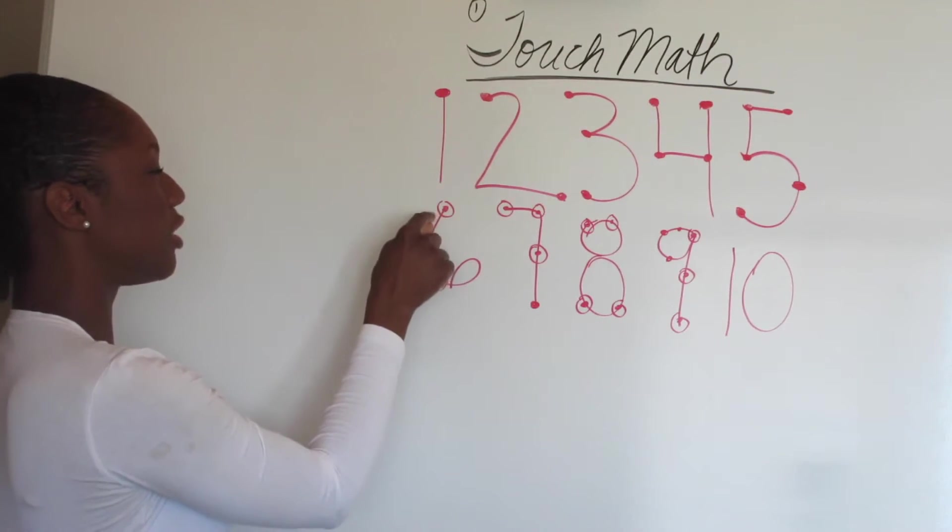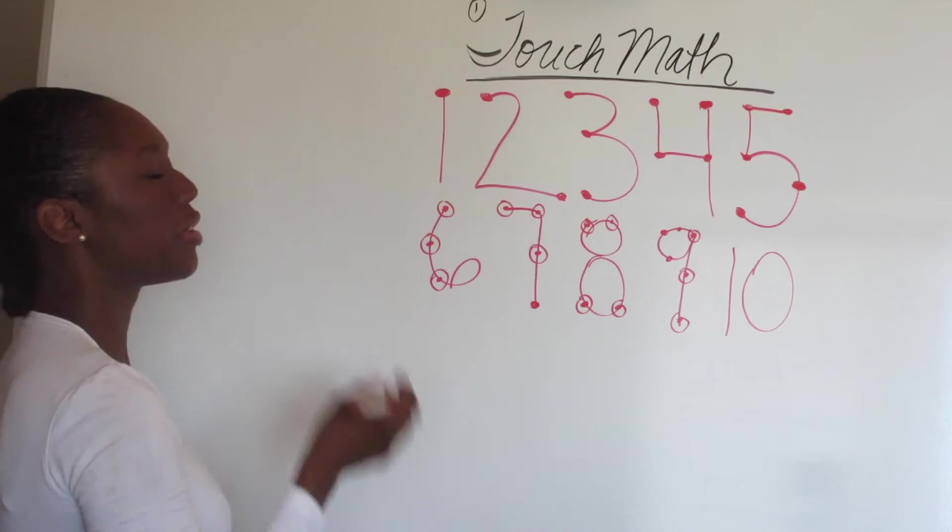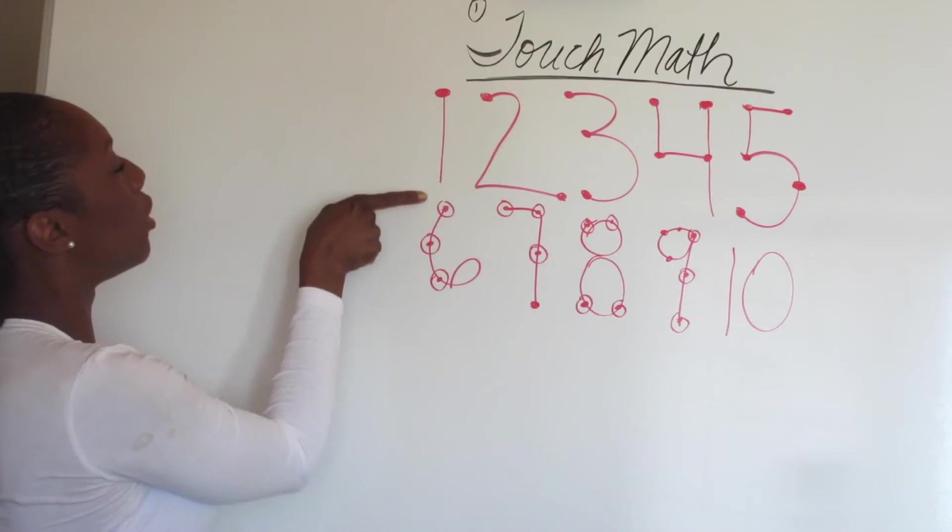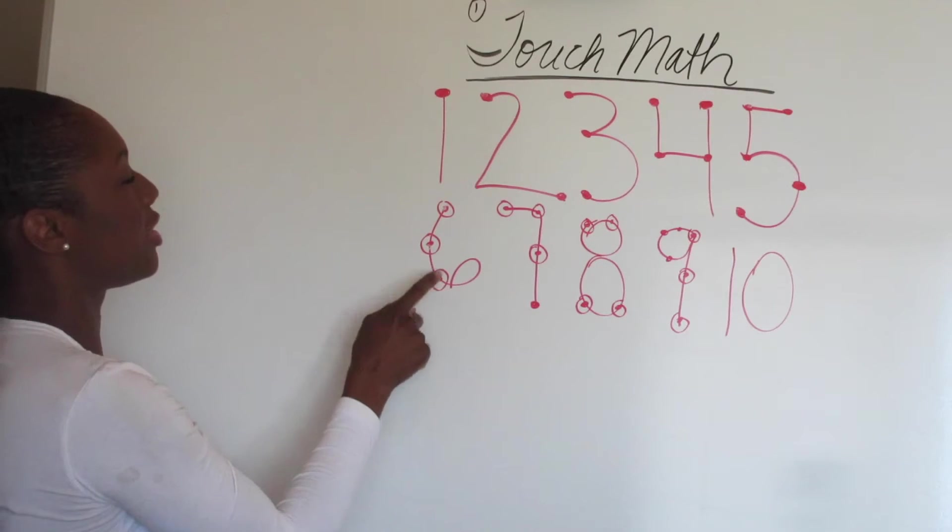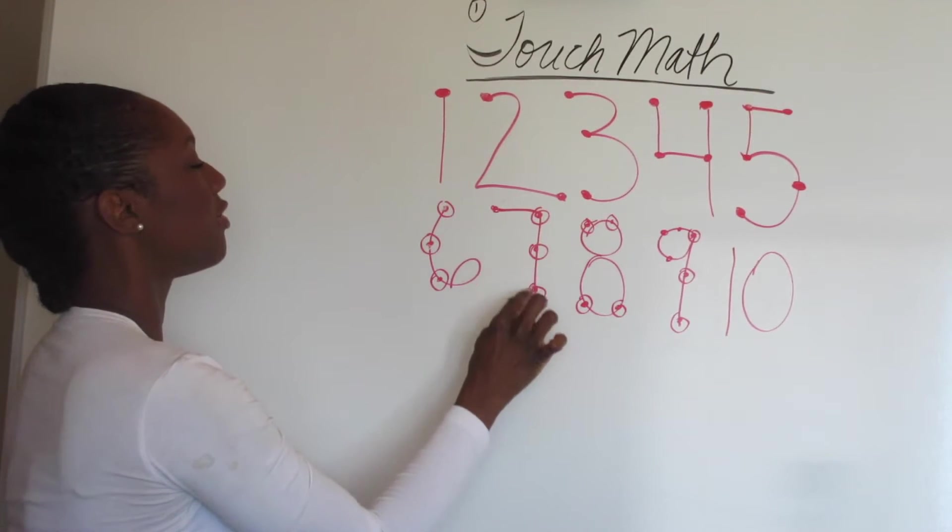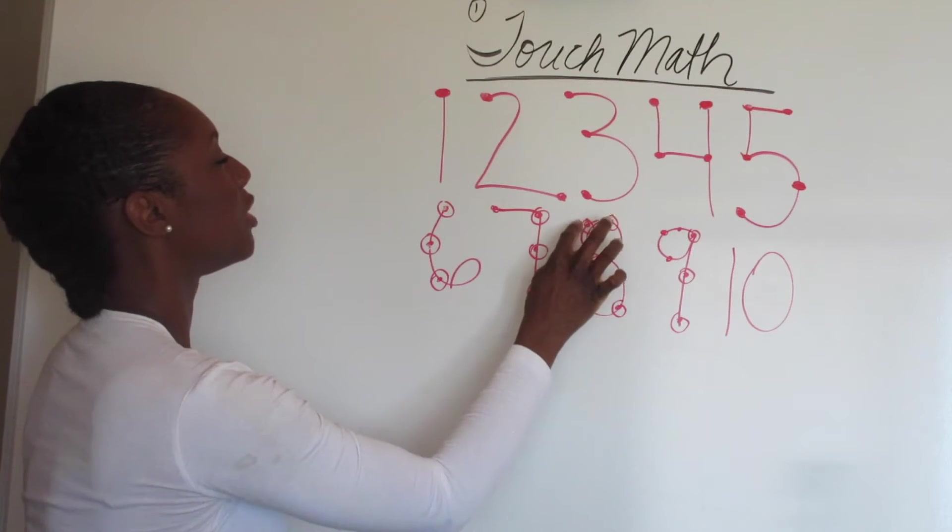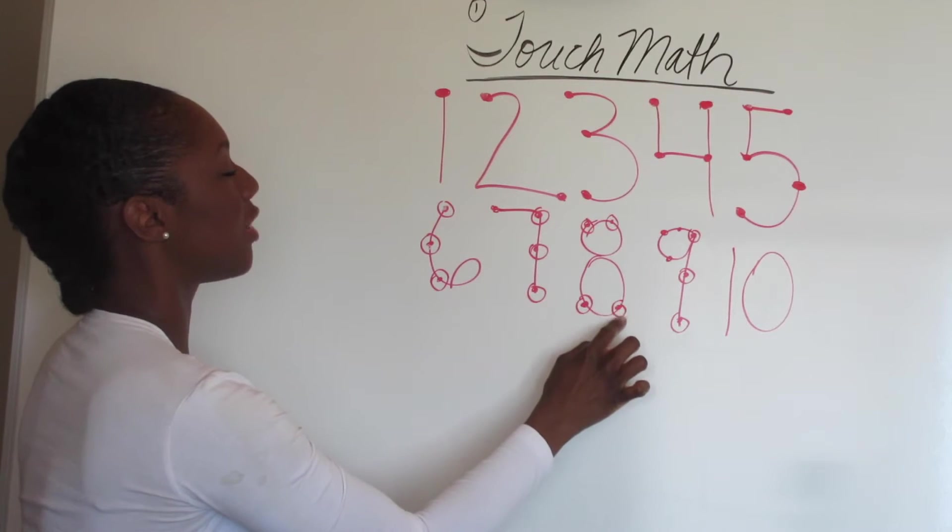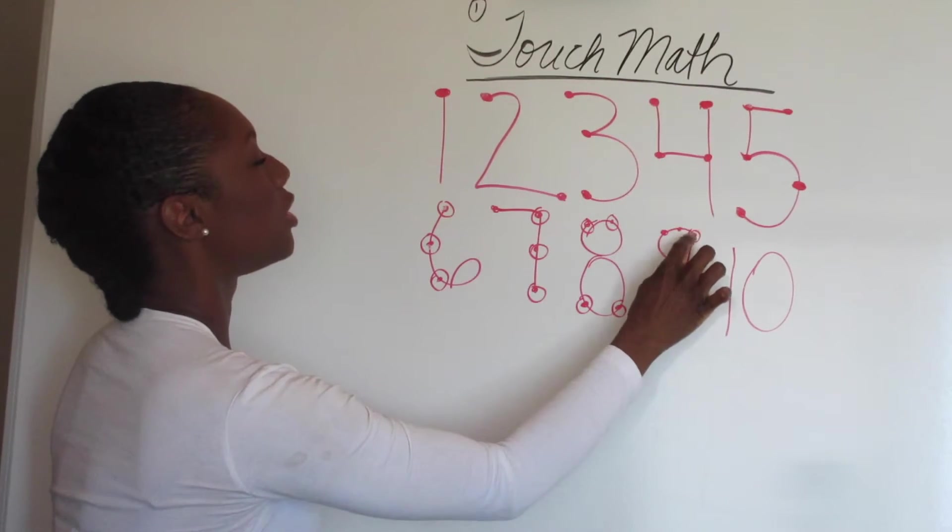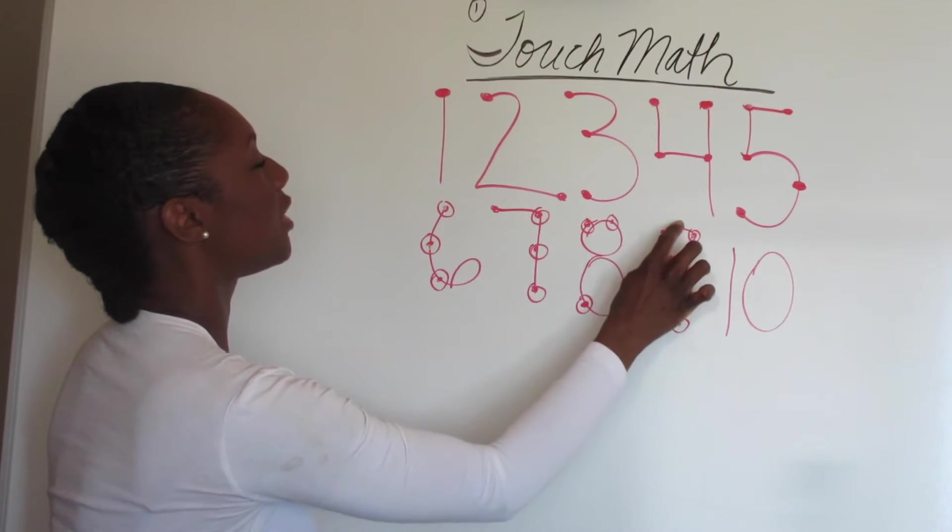Now you see how there's a small circle and a bigger circle? That means you count it twice. So one, two, three, four, five, six. Seven has one, two, three, four, five, six, seven. Eight has one, two, three, four, five, six, seven, eight. Nine has one, two, three, four, five, six, seven, eight, nine.